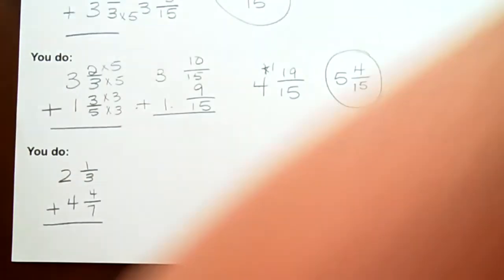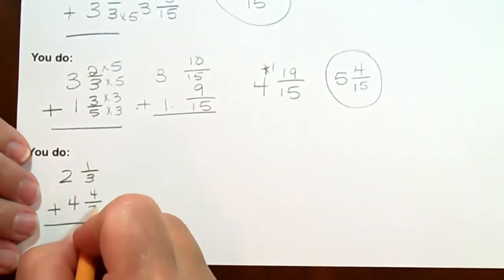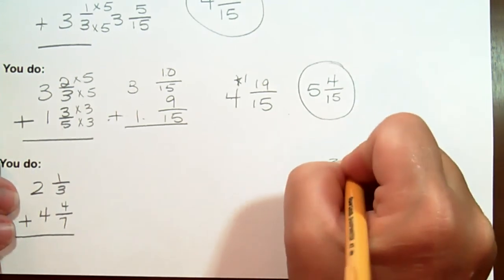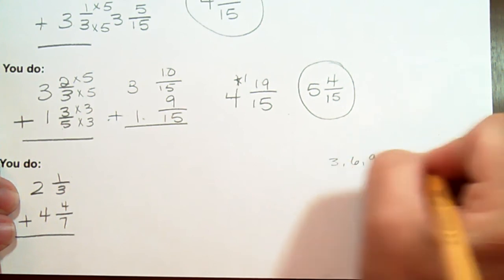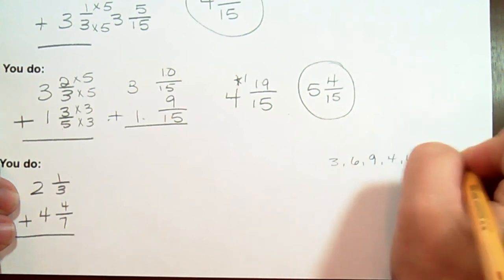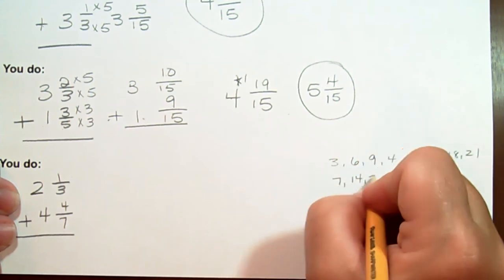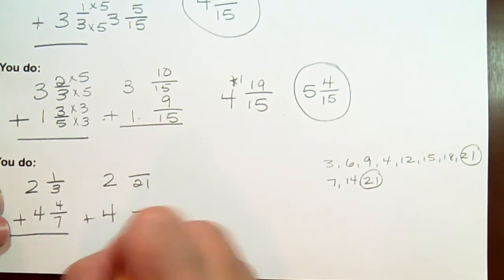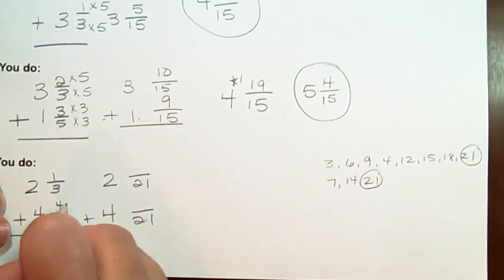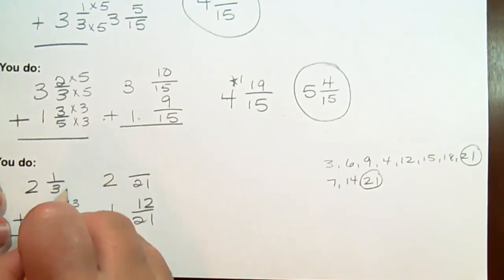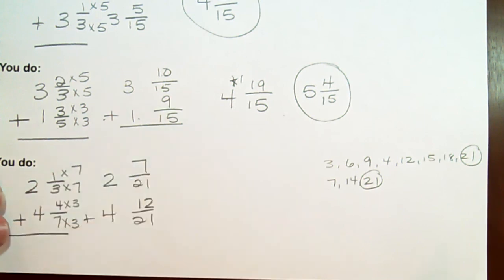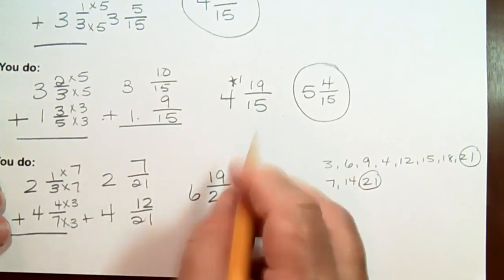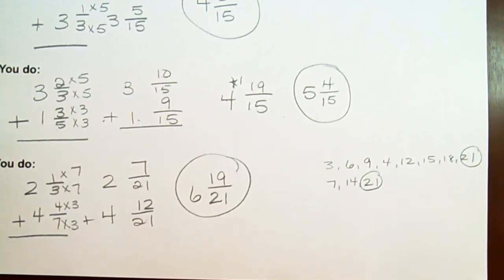The last problem: two and one-third plus four and four-sevenths. The common denominator is twenty-one — seven times three is twenty-one. Seven times three is twenty-one and four times three is twelve. Three times seven is twenty-one and one times seven is seven. Two plus four is six; seven plus twelve is nineteen; and the common denominator is twenty-one. The answer is six and nineteen twenty-firsts.